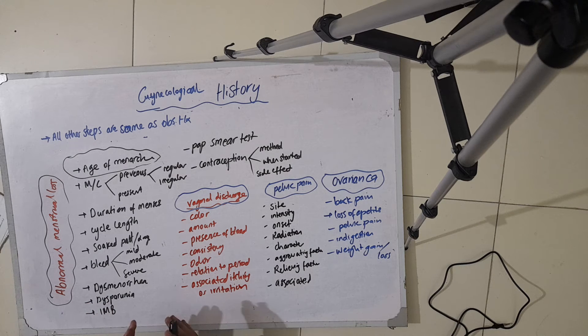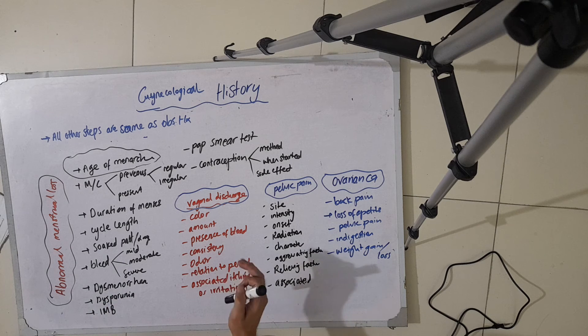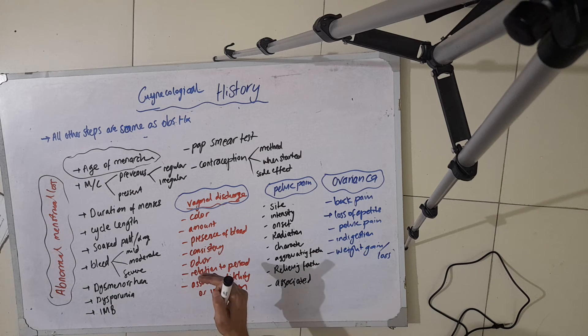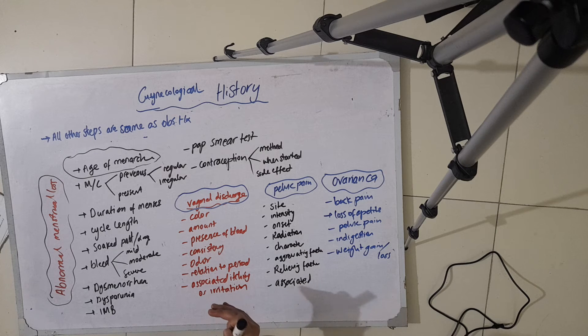If the patient comes to you with a presenting complaint of vaginal discharge, you ask about the color, amount, presence of blood, consistency, odor, and relation to period. Whether it is happening after the period, at the middle of the period, or before starting of the period, and any associated itching or irritation.